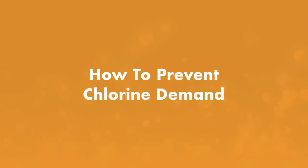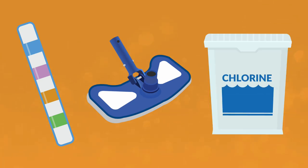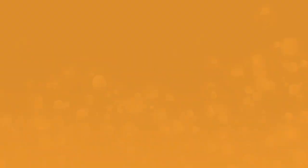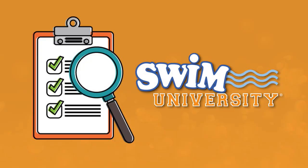Chlorine demand is easy to prevent if you keep a simple weekly maintenance schedule: test and balance your water, brush and vacuum debris from your pool, and add chlorine sanitizer whenever your levels start to drop. It's also a good idea to shock your pool once a week to keep contaminants at bay. And if you tend to get a lot of leaves and dirt in your pool, be sure to use a pool cover.